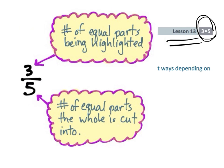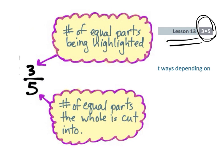So when you look at a fraction, the denominator — whatever that number is — is going to tell you the number of equal parts that the whole is cut into. So this whole thing right here, this number is dependent on what we decide counts as one whole.